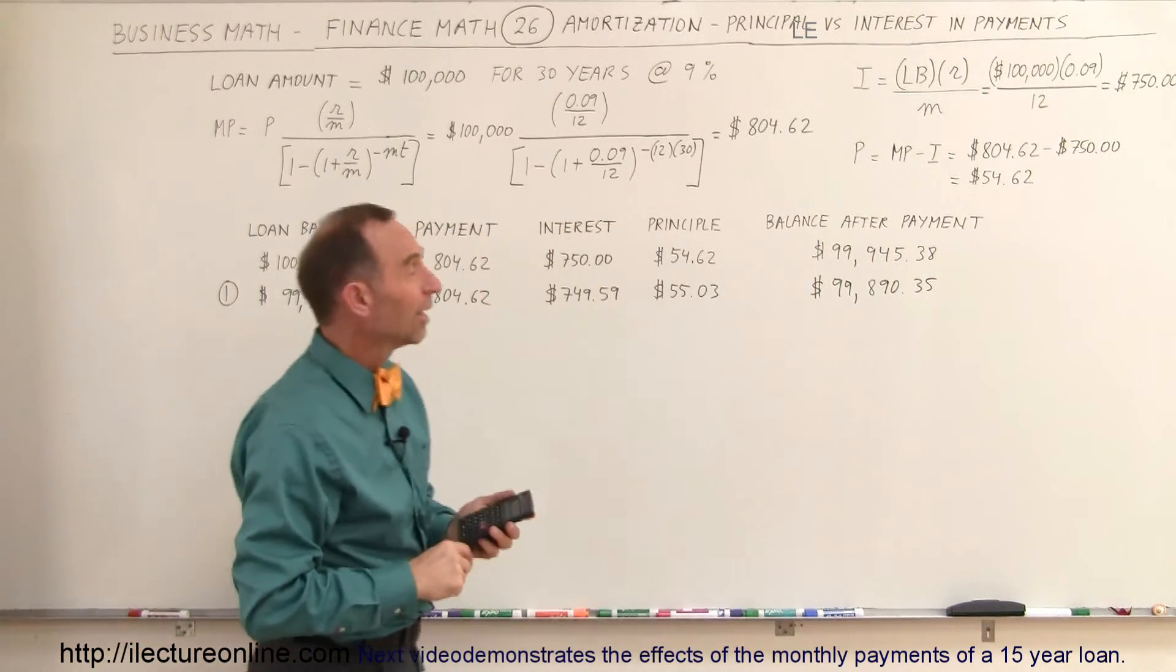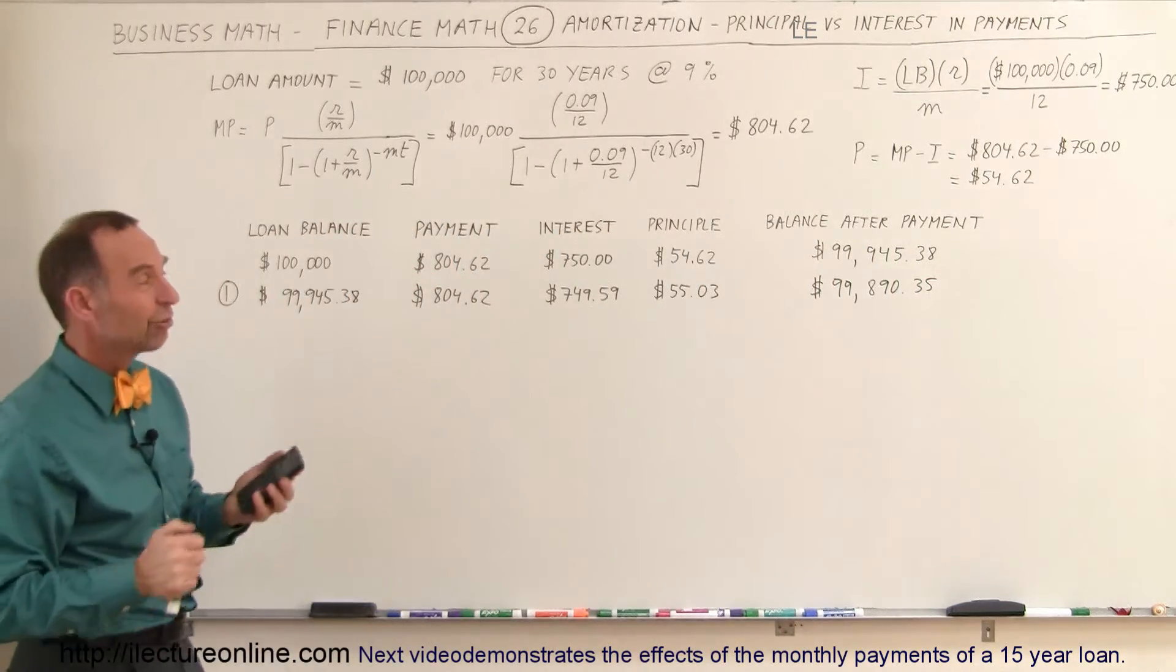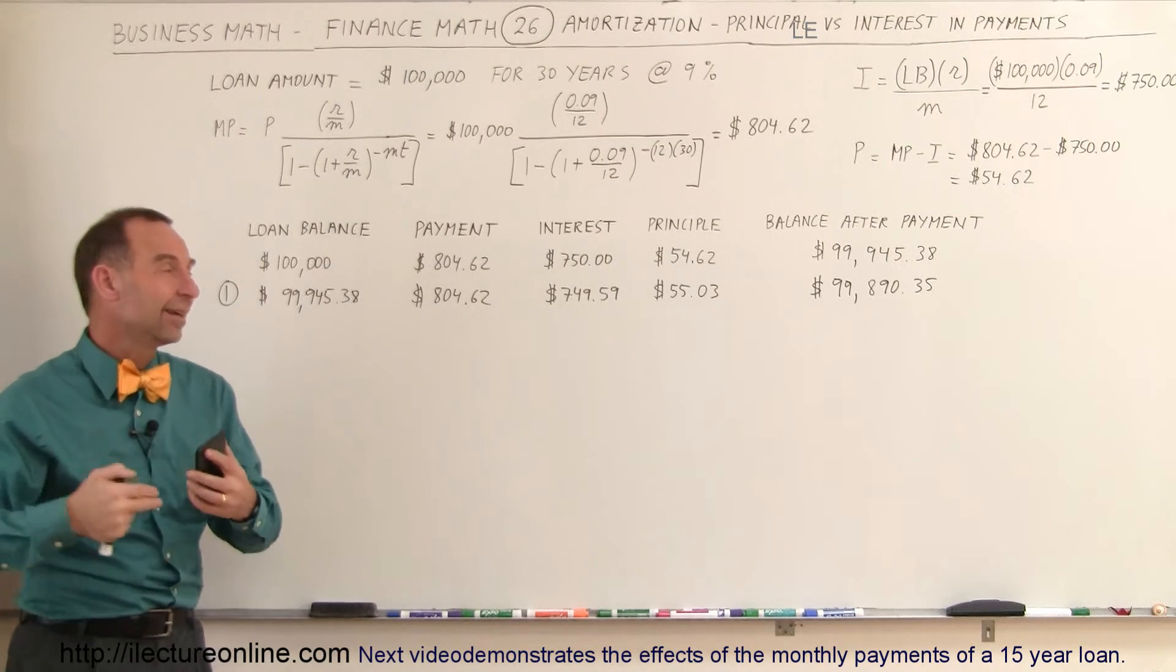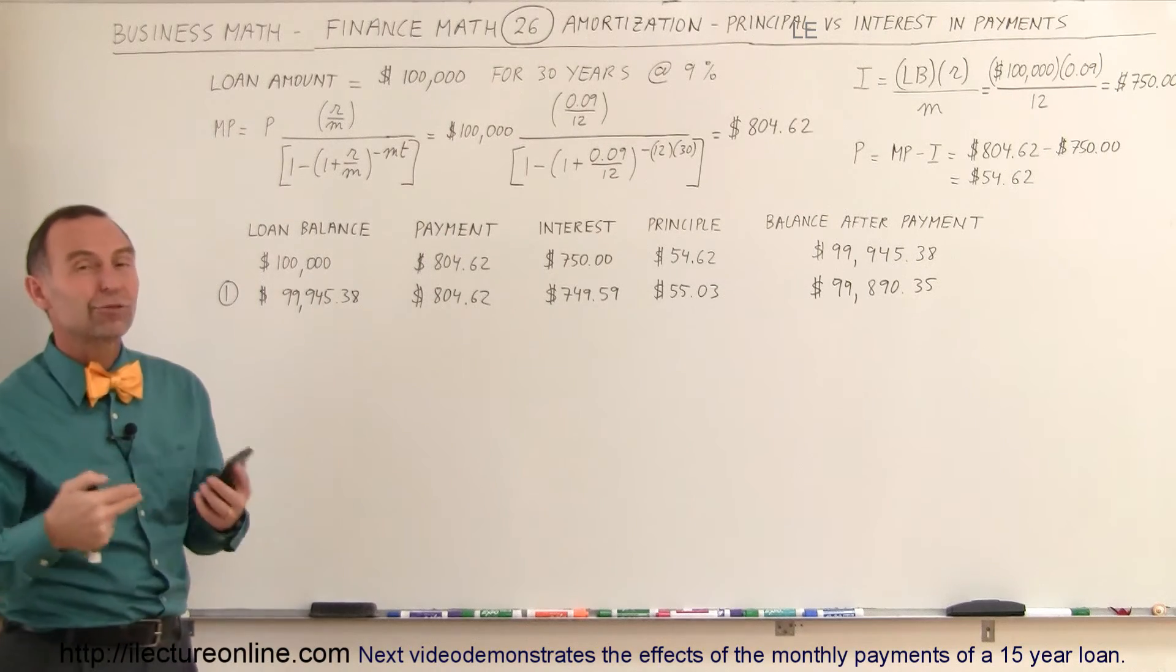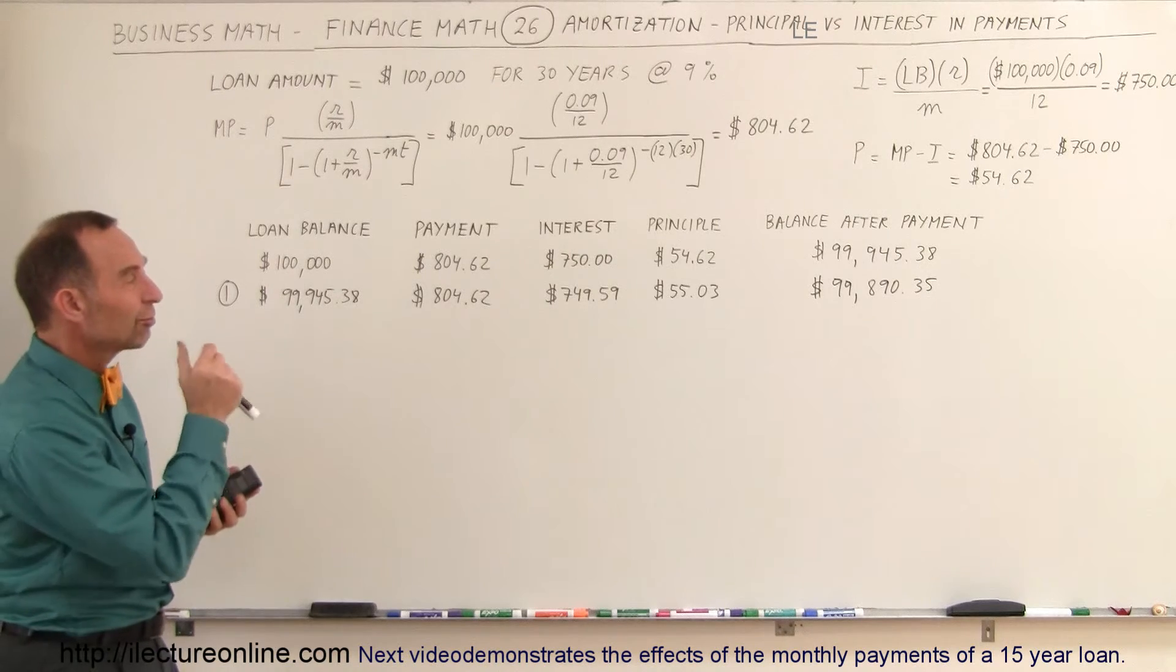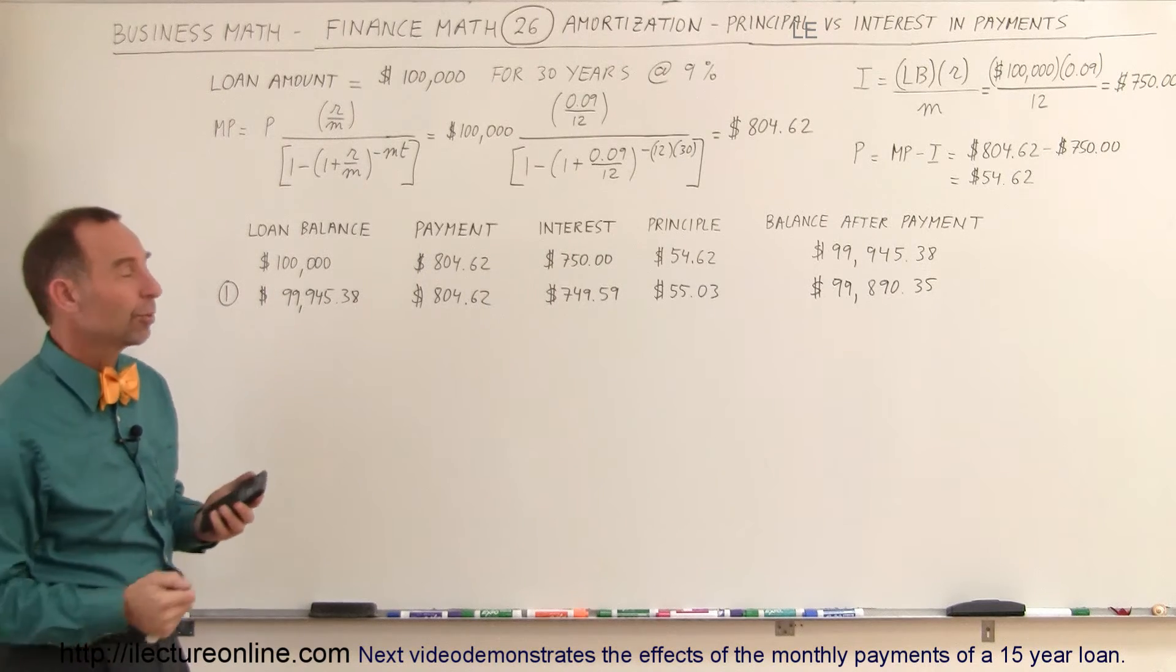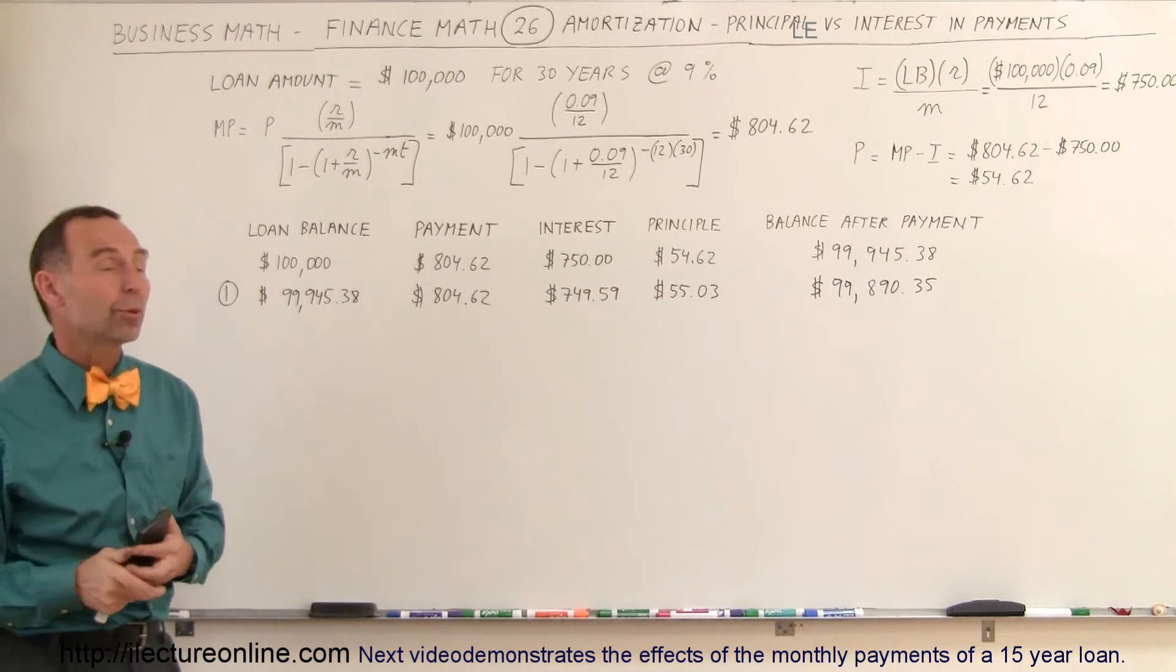So you can see that the paying off the loan is a very slow, painstaking affair for the first months and the first years. A very small amount of your money will go to principal, and a large chunk of each payment will go to interest.